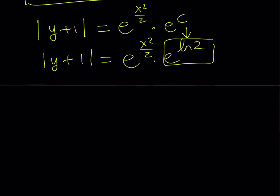So from here, we get the following. The absolute value of y plus 1 equals, this is a 2, 2 times e to the power x squared over 2. Now, this means that you can write it as plus minus sign like this.